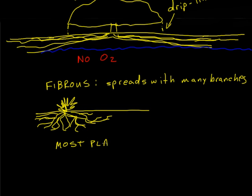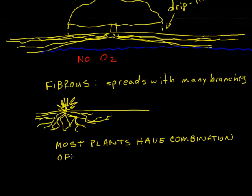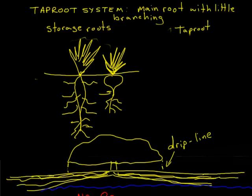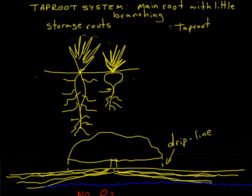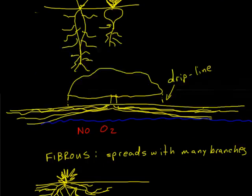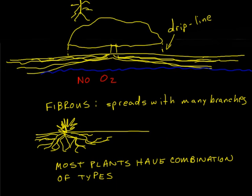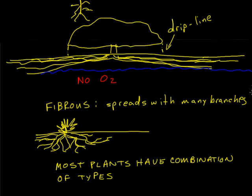Most plants have a combination of tap and fibrous type root systems. Particularly with tap roots, that can vary seasonally — as winter approaches, these tap roots can develop into larger storage type roots. But for the most part, most plants are going to have a combination of both types.